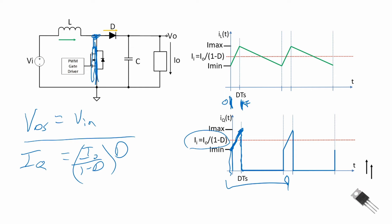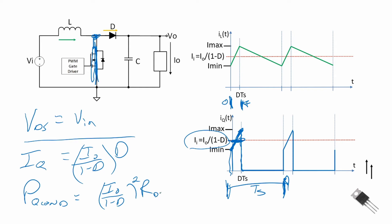The average conduction loss in the MOSFET is found by integrating instantaneous power over one period. Approximating the current as I_out / (1 − D), the conduction loss equals (I_out / (1 − D))² · R_DS(on) · D, where R_DS(on) is the drain-to-source on-resistance. Integrating over one period and dividing by the period introduces the factor D. That is our conduction loss equation for the boost converter MOSFET.